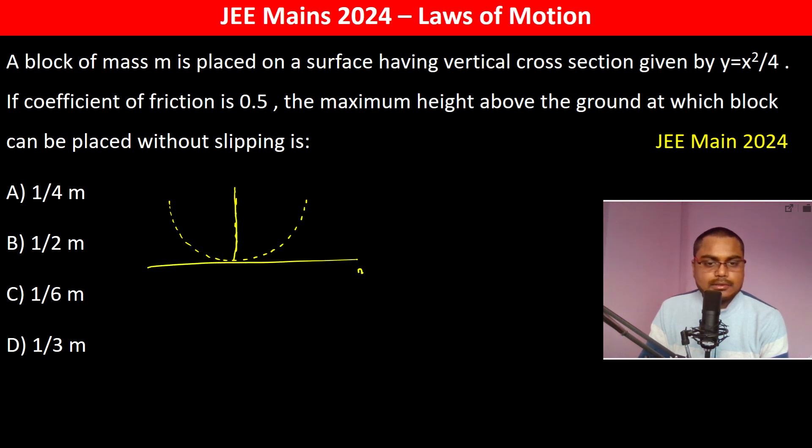This is x and this is y. As the coefficient of friction is 0.5, the maximum height above the ground at which the block can be placed without slipping.